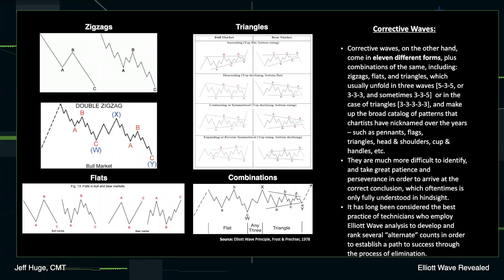Another possibility is a combination where we see really any three different forms meld together. In this particular example, you see a flat melded with a zigzag and a triangle to complete a very complex corrective waveform that analysts will have to go through many iterations and many alternate counts to determine what's going on. It takes a lot of patience. Successful Elliotticians — those who utilize the Elliott wave principle in their analysis — will develop and rank a number of alternate counts in order to establish that path to success through the process of elimination.